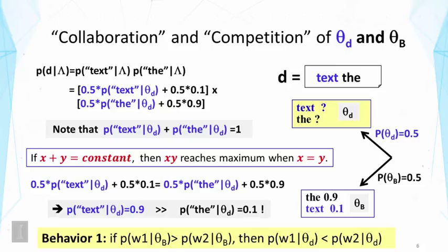we can indeed encourage the unknown topical word distribution to assign smaller probabilities for such common words. Instead, put more probability mass on the content words that cannot be explained well by the background model, meaning that they have a very small probability from the background model like text here.